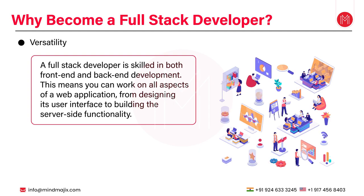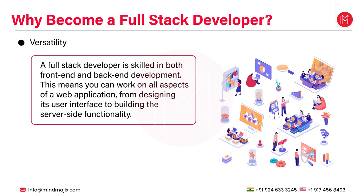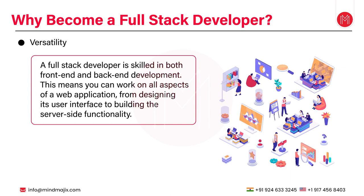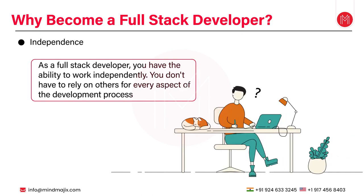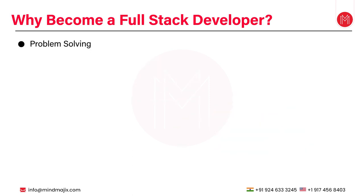Firstly, versatility: a full stack developer is skilled in both front-end and back-end development, meaning you can work on all aspects of web application development — from designing the user interface to building server-side functionality. Being versatile allows you to handle different tasks and contribute to various parts of a project. Next is independence: as a full stack developer you have the ability to work independently, handling tasks such as setting up databases, creating APIs, and implementing user interfaces all by yourself.